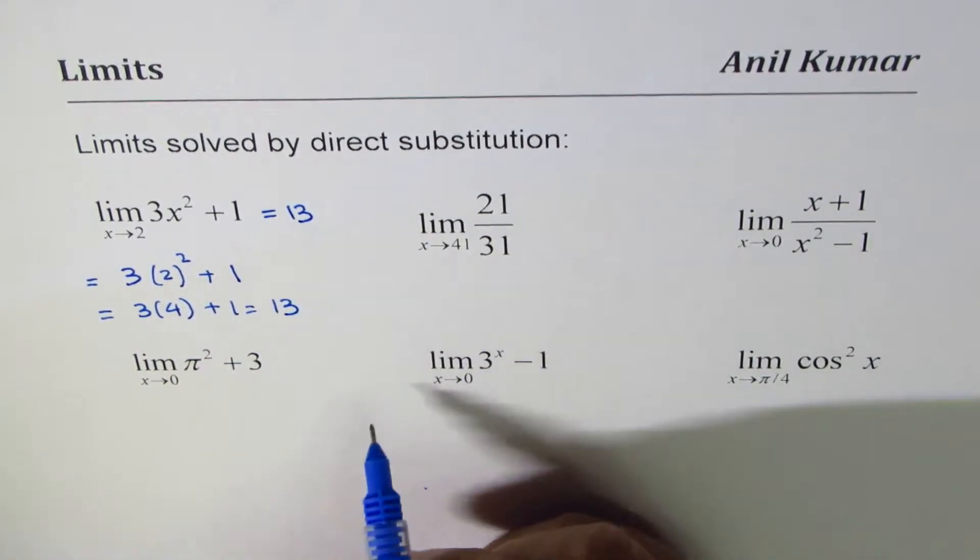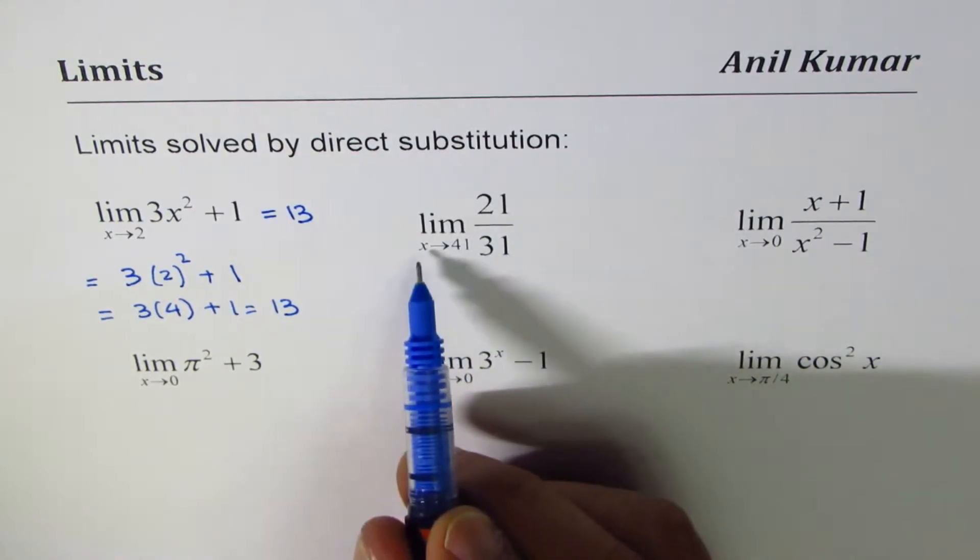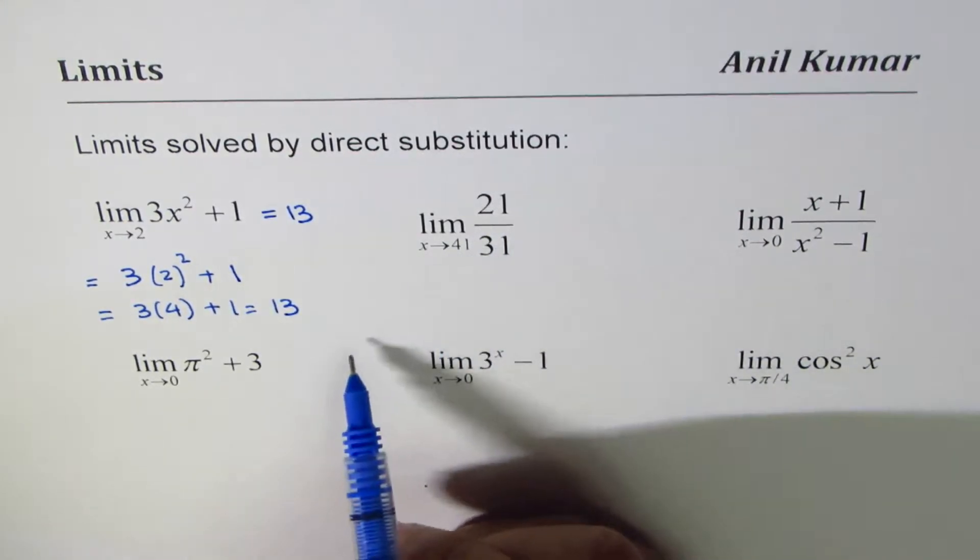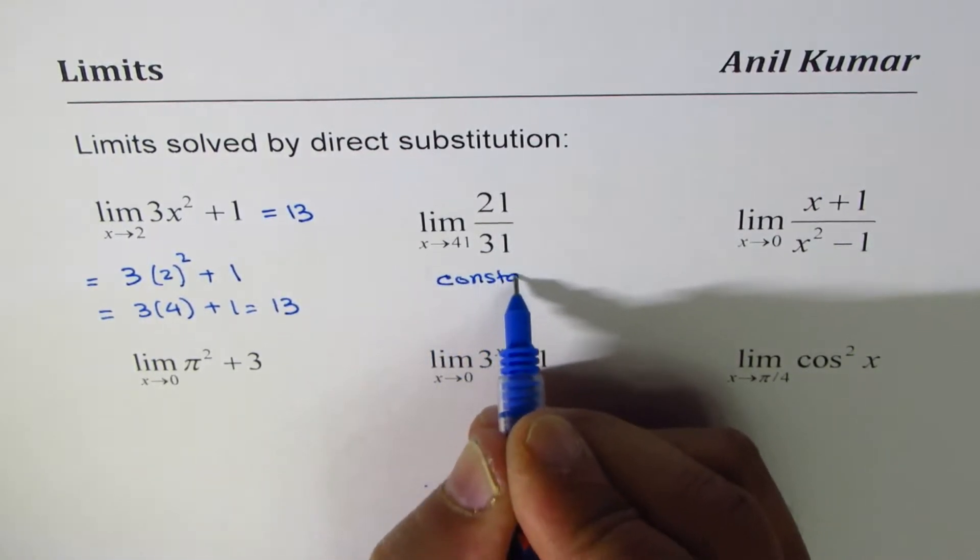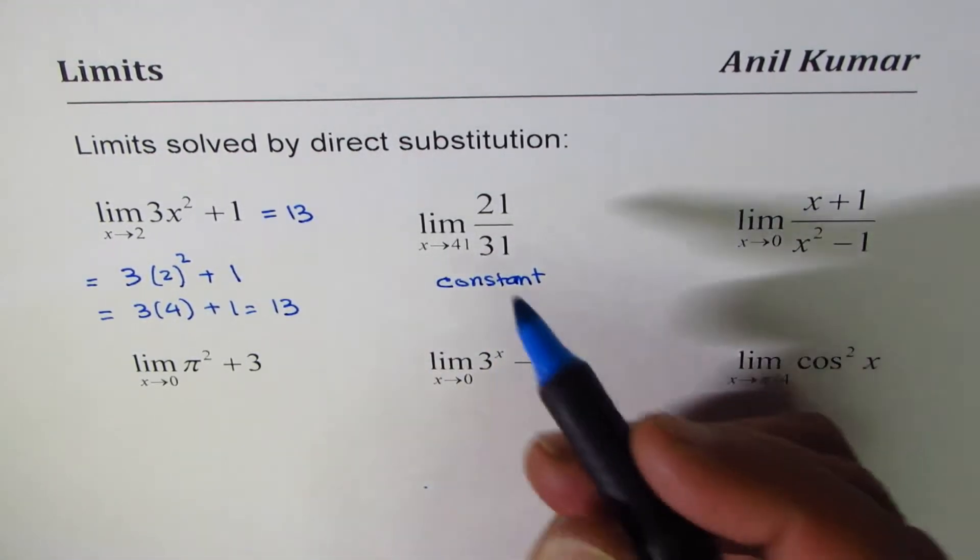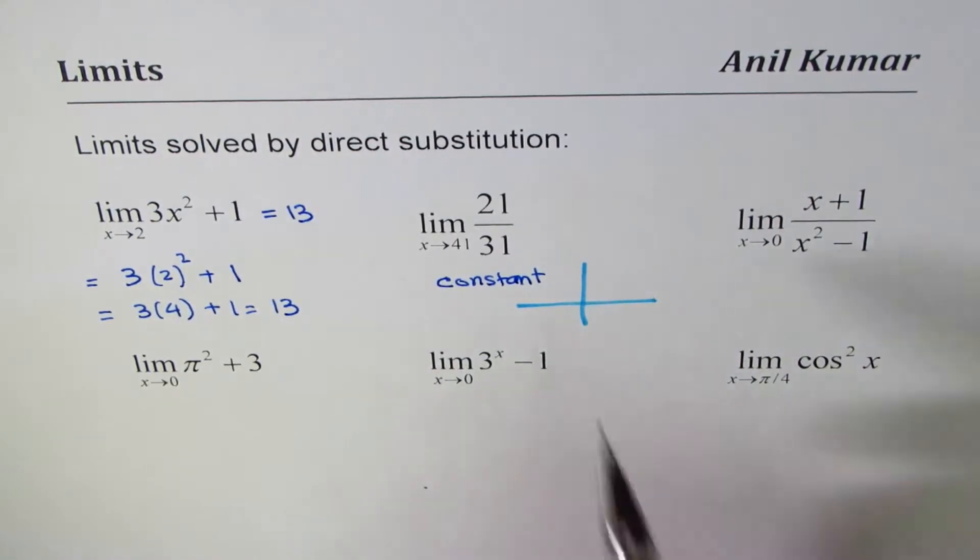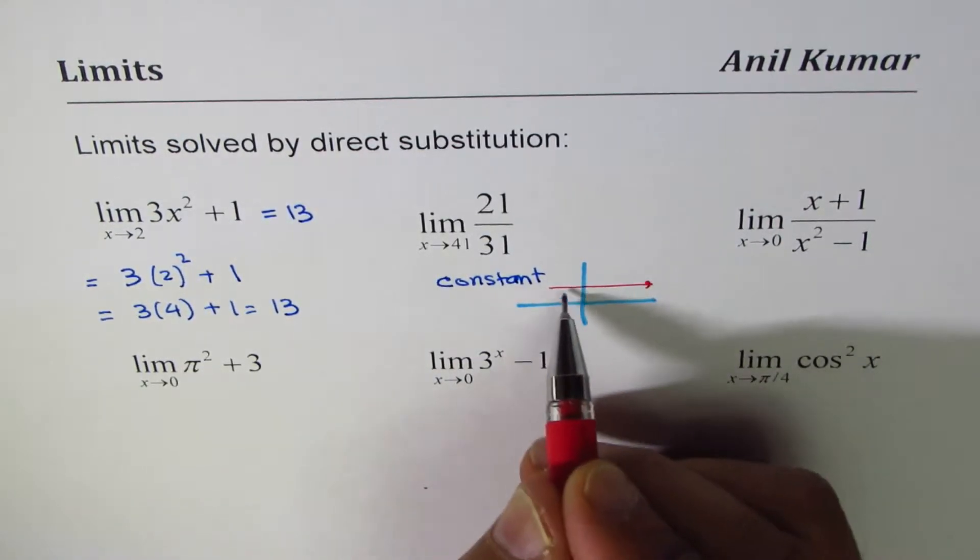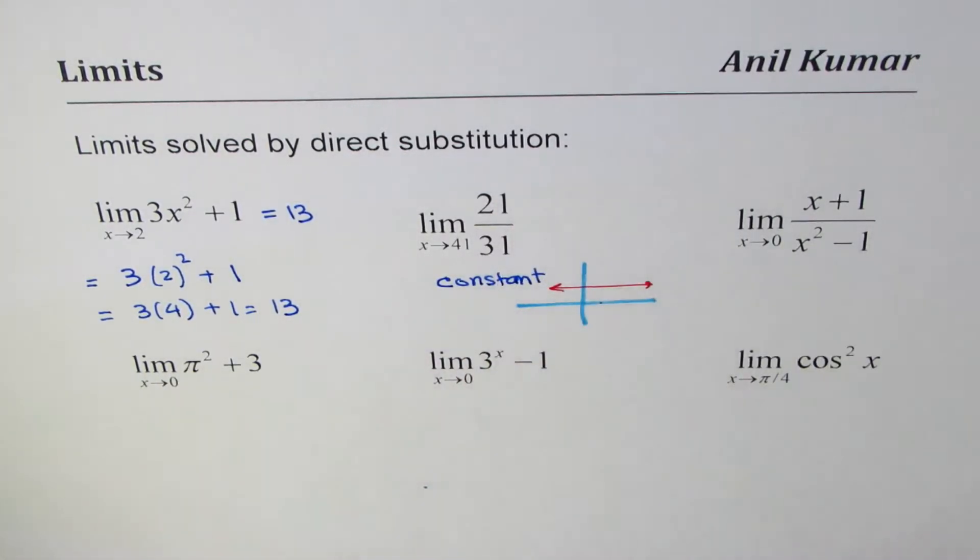The other question here is limit 21/31 when x approaches 41. You will see this is a constant function. For a constant function, if you sketch a graph it will always be a horizontal line. This is positive, and if you sketch a graph what you get is a horizontal line, correct, and the value at any value of x will be 21/31.